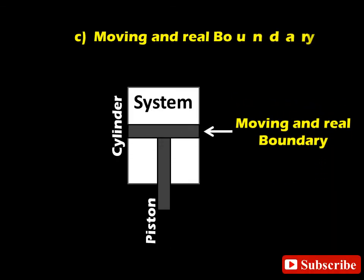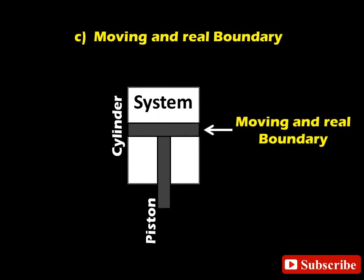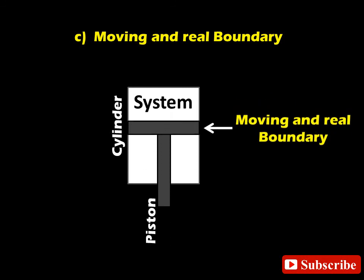C. Moving and real boundary. When the boundary is not fixed but moving by piston cylinder arrangement, it is known as movable boundary.